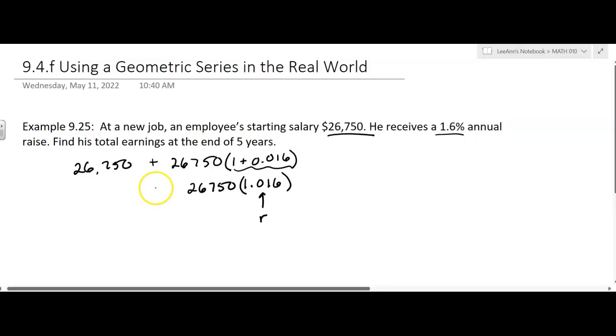So we have enough information right now. This is A sub 1. We know that we're going for 5 years. Oops, I didn't read that part. Find his total earnings at the end of 5 years. So we want 5 of these terms. I'm not going to figure out what they are. I'm going to go right to the formula.